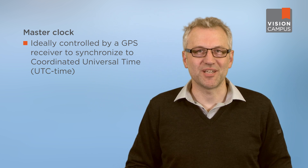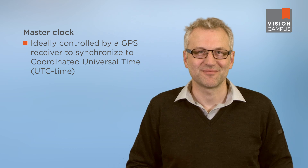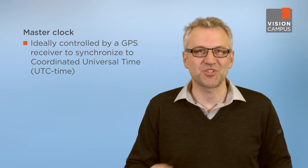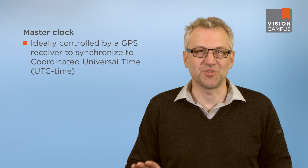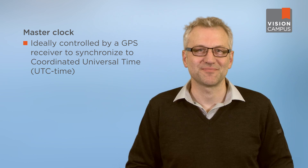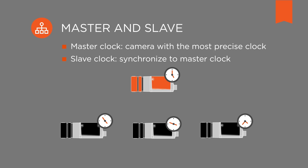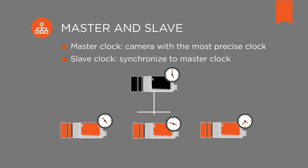The master clock is ideally controlled by a GPS receiver, which it can use to synchronize to Coordinated Universal Time, or UTC. The other cameras — the slaves — synchronize to the camera operating as master clock until they are all working with the same precise system time, measured in nanoseconds.